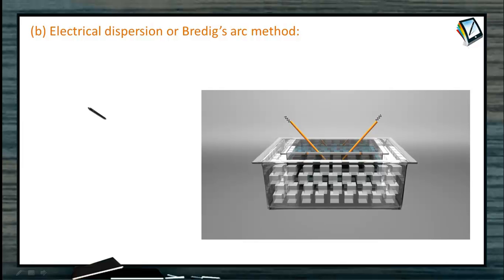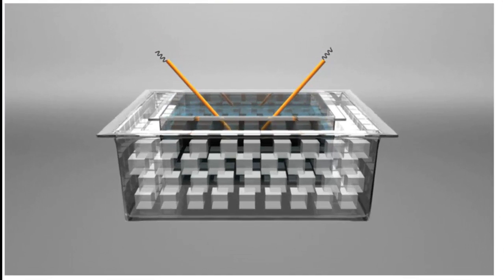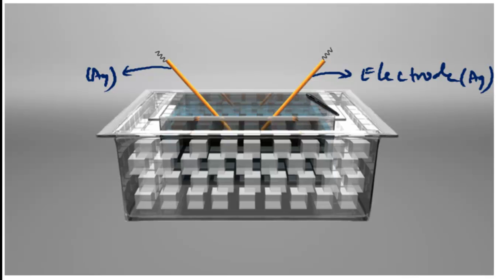Another method for preparation of sols is electrical dispersion, also called Breddock's arc method. In this method, sols of metals like platinum, silver, copper, or gold are prepared. The metal you want to form into a sol is taken as two metal rod electrodes — for example, to form a silver sol, you take silver electrodes on both sides.